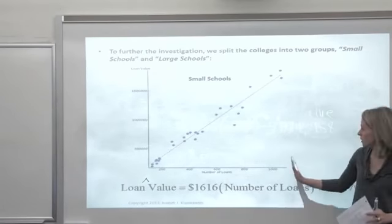If you look at the second scatter plot and regression line, these are the large schools. Here we see the loan value is 2,419 times the number of schools minus $802,634. And here's the regression line for those. The large schools pick up sort of where the small schools left off and go all the way up to schools that issued over 12,000 loans.